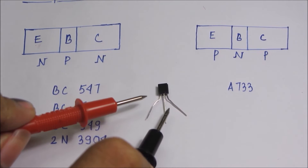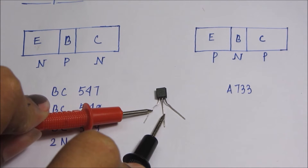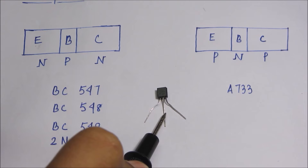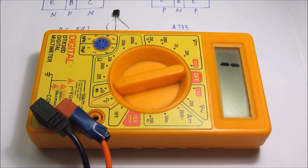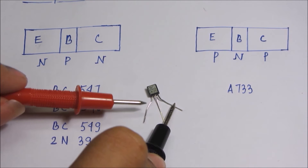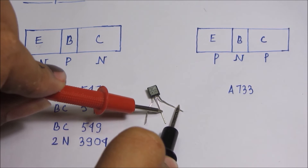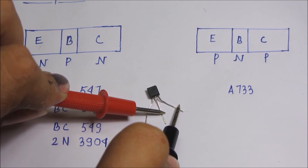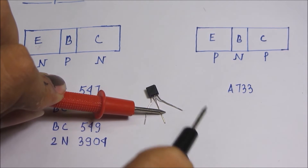Use the black probe in the middle terminal and the red probe in the left terminal — you can see the multimeter shows a value of one. Now placing the red probe in the right terminal, there is no change; the same value of one is being shown. Now changing the black probe to the right-most terminal of the transistor and the red probe in the middle — now you can see some value is being displayed on the digital multimeter. Changing it to the left-most terminal also gives some value.